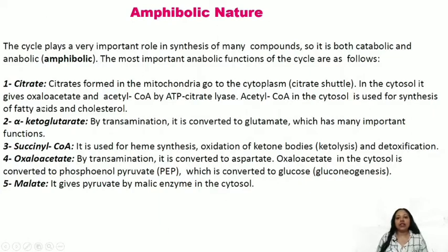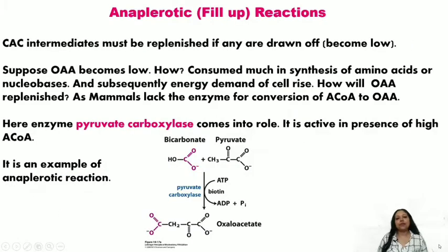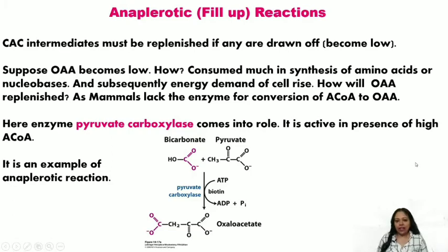A new term to introduce is anaplerotic or fill-up reactions. The citric acid cycle is cyclic, not linear like glycolysis. If any intermediate becomes depleted, the cycle cannot complete — oxaloacetate cannot regenerate and the cycle halts. For example, if the body suddenly needs amino acids, purines, and pyrimidines, oxaloacetate is consumed for those purposes as fast as it is generated.